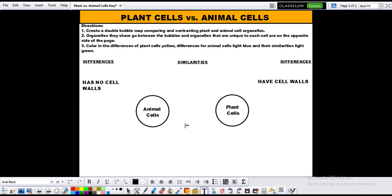Also, similarities organelles that go down the middle. One organelle that we can talk about is the nucleus. All right. So we know that both plants and animal cells have nuclei because they are eukaryotic cells, as we discussed.